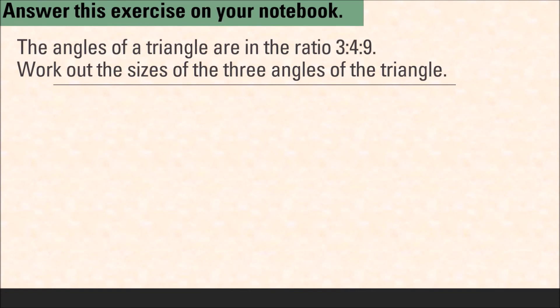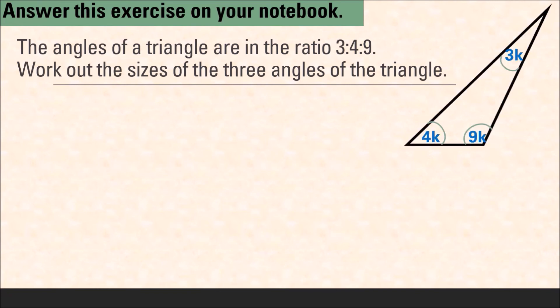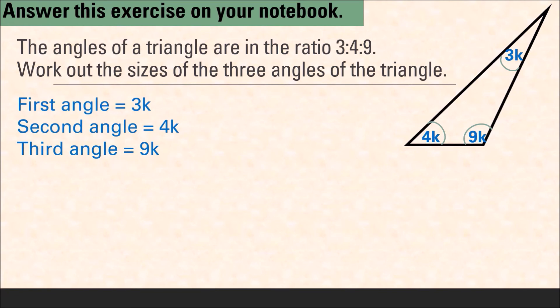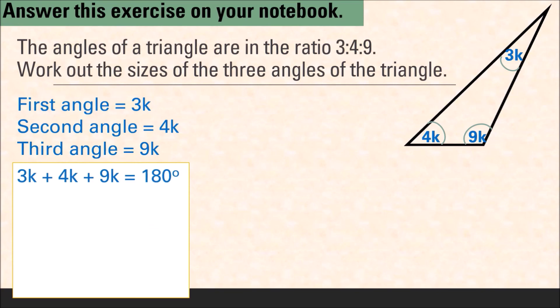I will show you an algebraic way to calculate the sizes of the three angles. The ratio 3 is to 4 is to 9 is a simplified form — the actual angles were divided by a common factor k. To get back the original sizes we multiply by k, so the three angles are represented as 3k, 4k, and 9k. We set up our equation using the fact that the sum of the three angles is 180 degrees: 3k plus 4k plus 9k equals 180 degrees.